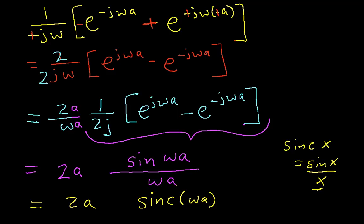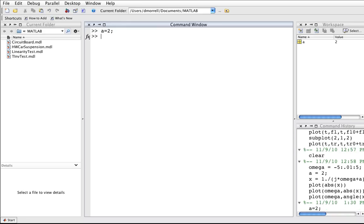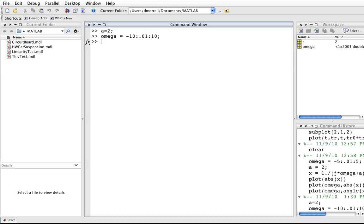So, let me plot this sinc function. And to do this plot, I'll go to MATLAB. And I'll create an omega. Well, let's start off by saying a is equal to 2. Seems like a good number for a. I'll create an omega. And we'll have omega go from minus 10.